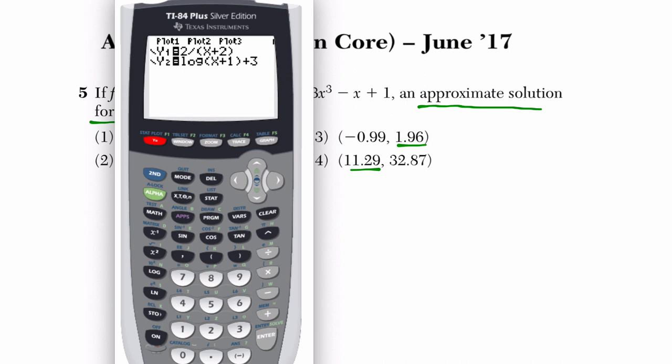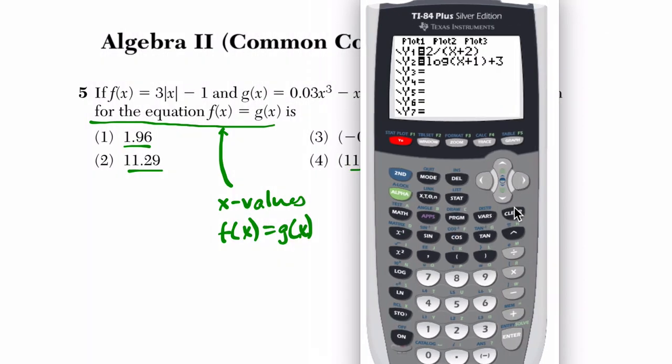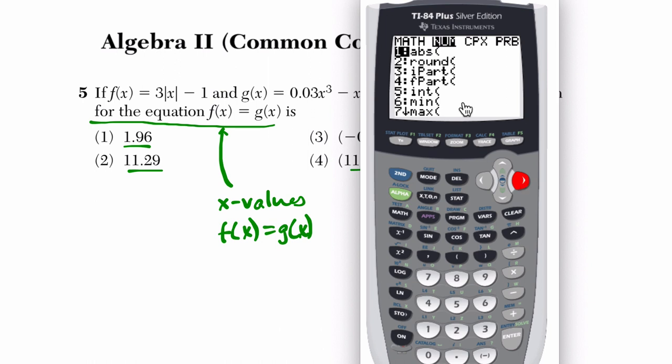So here, I go to the y equals button, I can quickly enter these two functions, clear off any old things. And then I press three times the absolute value. Now absolute value is under the math button. And under number, the first choice is absolute value.